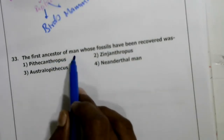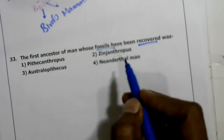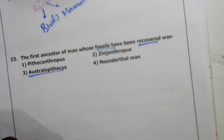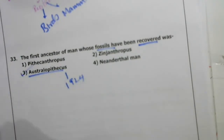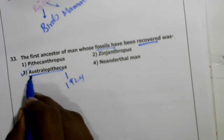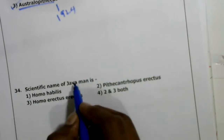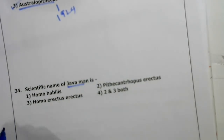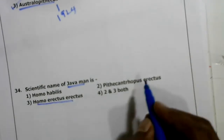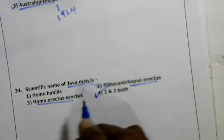Thirty-third question: the first ancestor of man whose fossils were discovered was Australopithecus, discovered in 1924. That is the correct answer. Thirty-fourth question: the scientific name of Java Man is Homo erectus, also called Pithecanthropus erectus. Java Man and Peking Man both come under Homo erectus. The fourth option is correct.